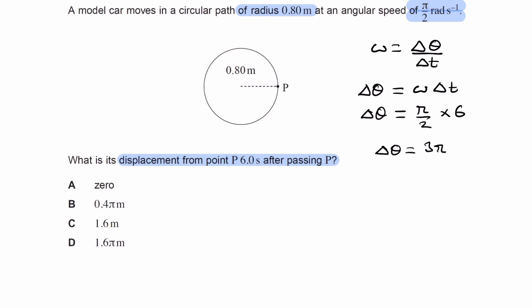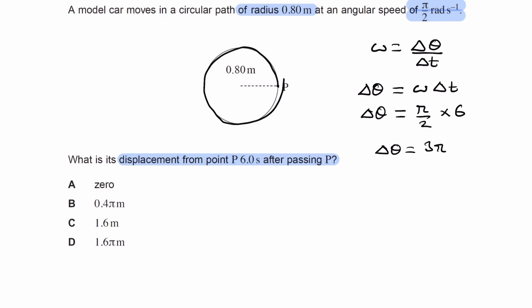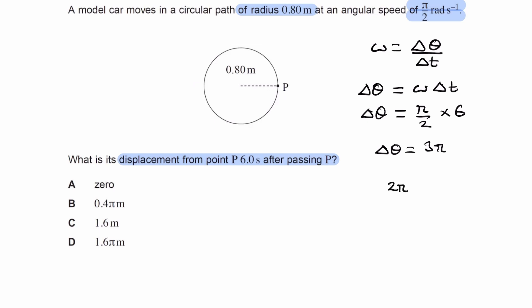In other words, this car, as it's gone round this circle, has gone round a total of 3 pi radians, which corresponds to 1.5 rotations, so it'll end up over here. That's because one full rotation is 2 pi. So if we end up over here, this is diametrically opposite to point P — in other words, this is the diameter of the circle.